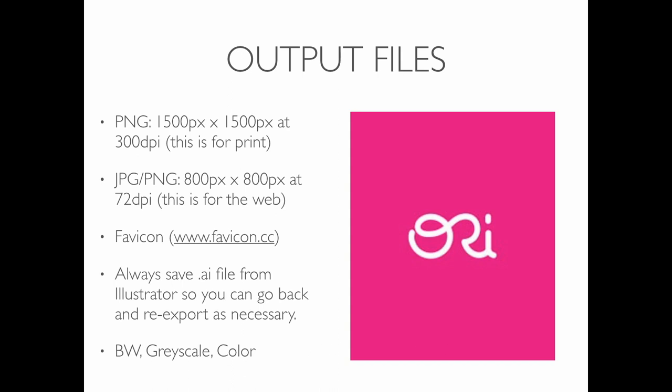For output files, we're going to work at 1500 pixels by 1500 pixels at 300 DPI. That's kind of a baseline, but remember this is a vector-based graphic, so if we needed it to be bigger we can scale it up. JPEG or PNG at 800 by 800. You can even make it really small — 24 by 24 pixels — one of those little icons that goes at the top of your web browser. Make sure you save the Adobe Illustrator file in addition to the export files. Think about black and white, grayscale, or color.